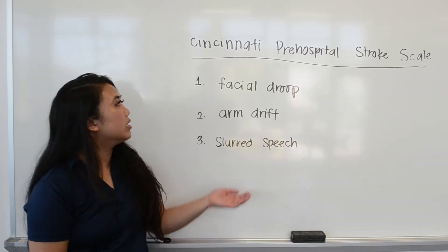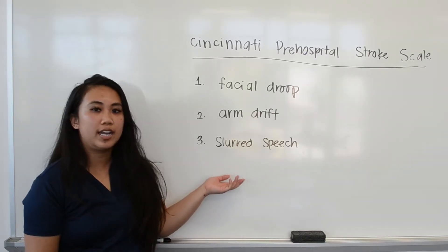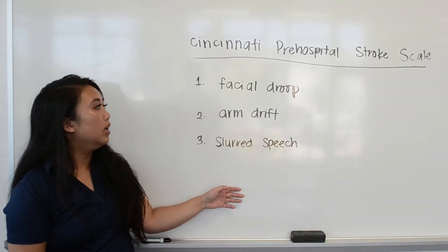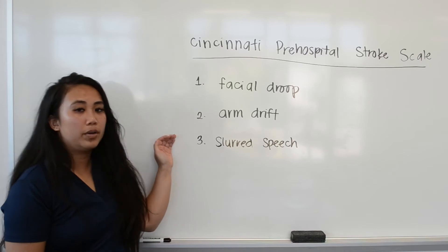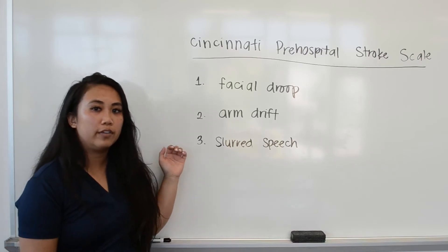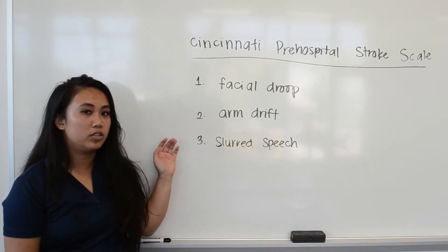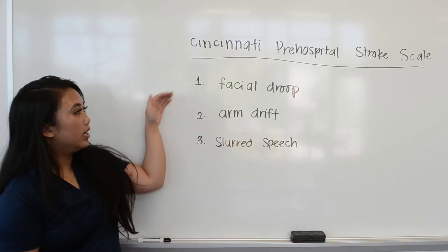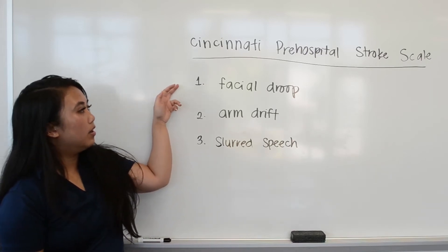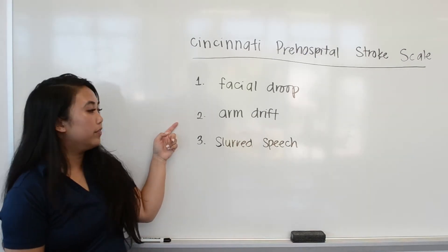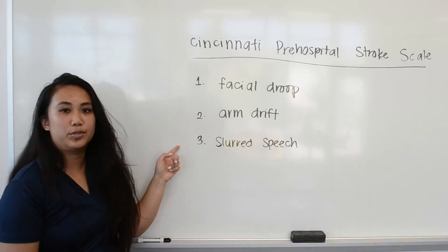All right, everybody, this is going to be your Cincinnati Pre-Hospital Stroke Scale. The three components you're going to be looking for in a patient with a suspected stroke is going to be facial droop, arm drift, and slurred speech.